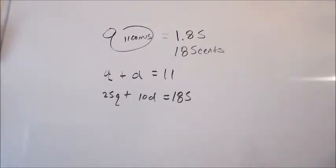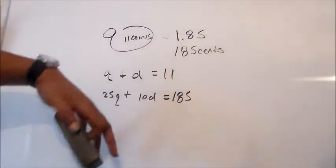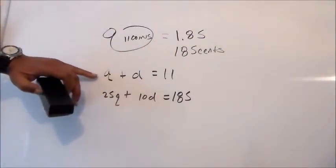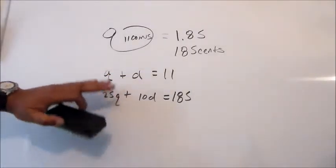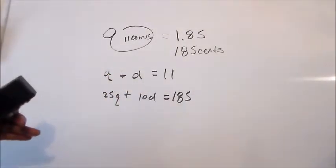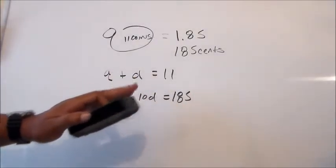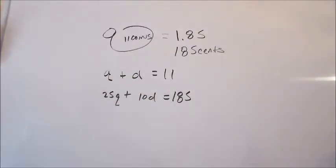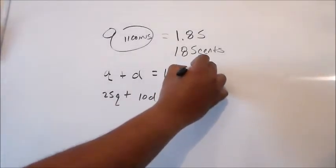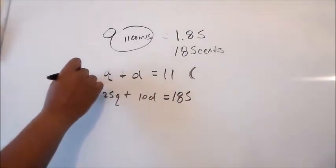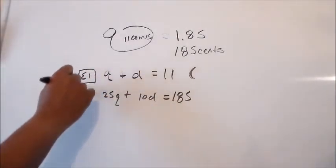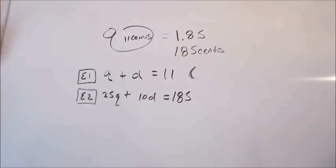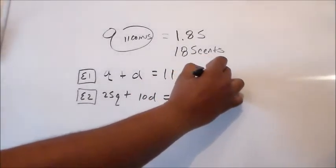Now what I want to do is a process called adding down. So we're going to find out what this plus this is and what this plus this is. But what we're going to do is isolate one of the variables because q and d are the variables. So I'm going to isolate one. So what I'm going to do is multiply, and I'll call this e1 for equation one and e2.